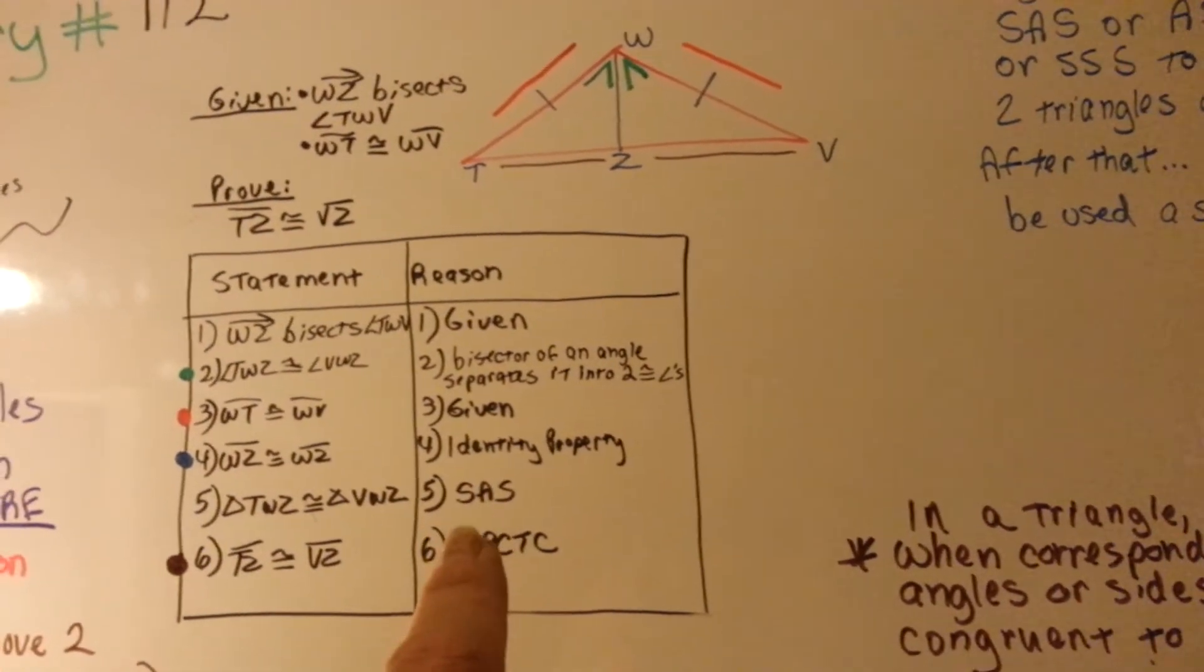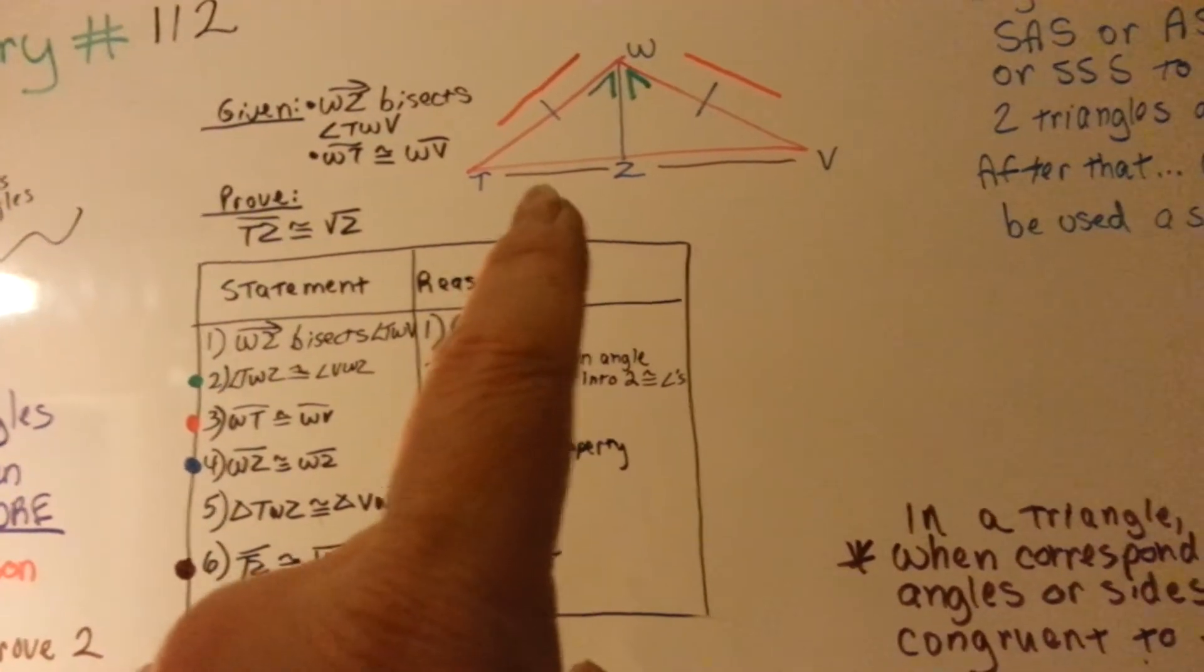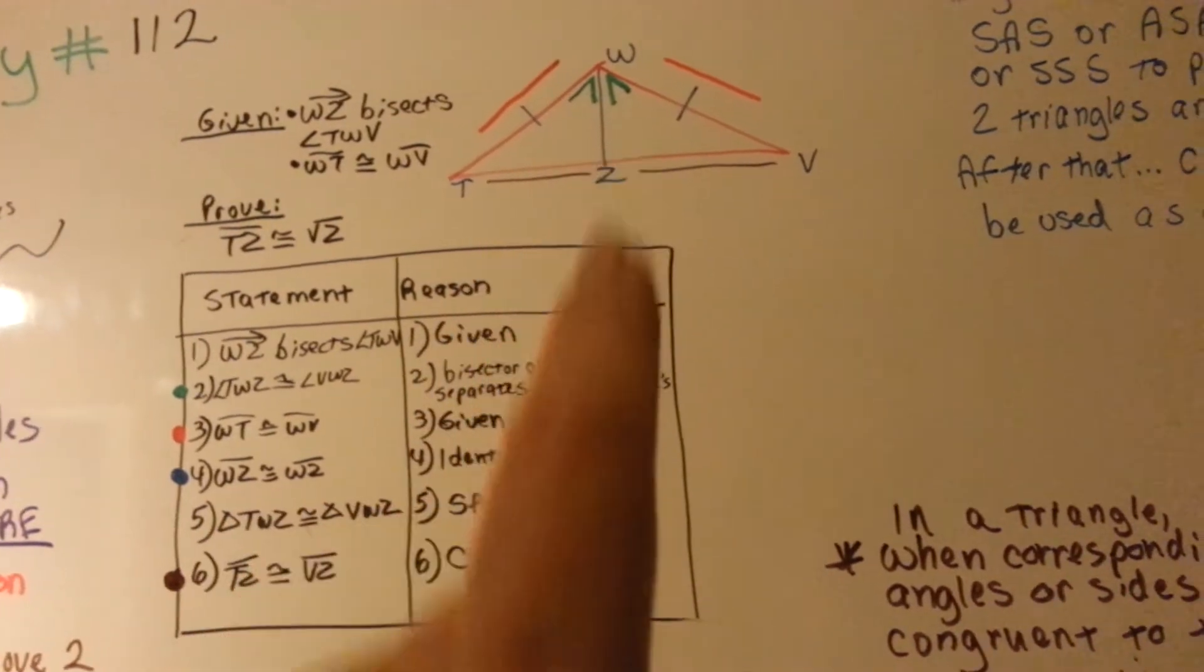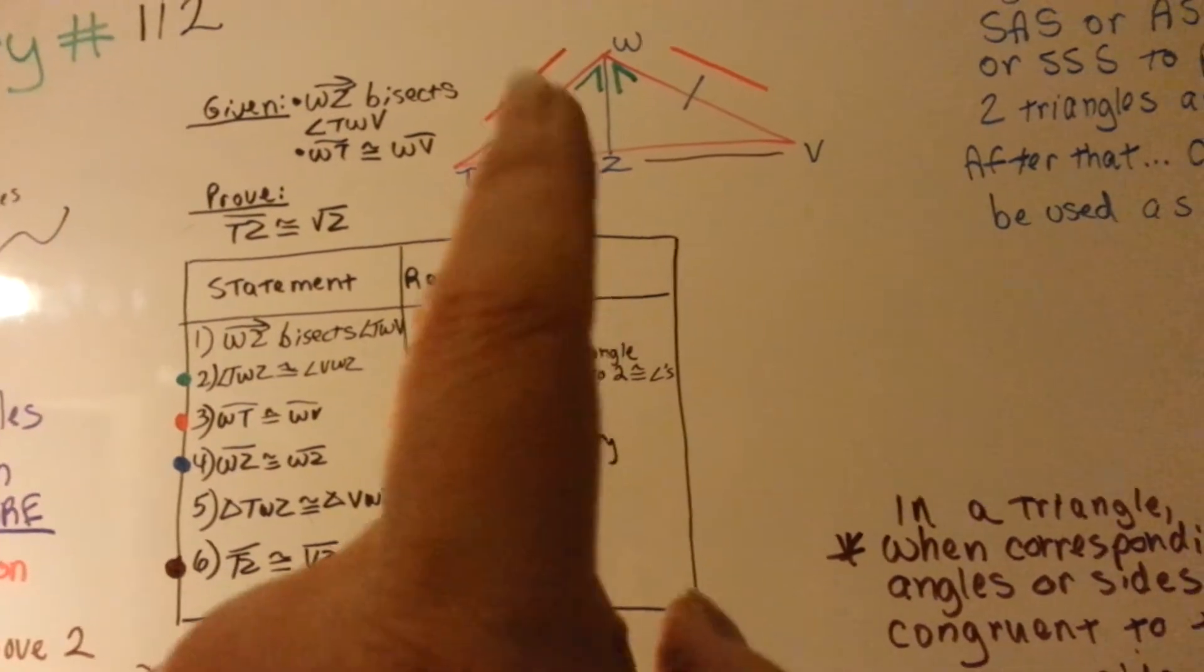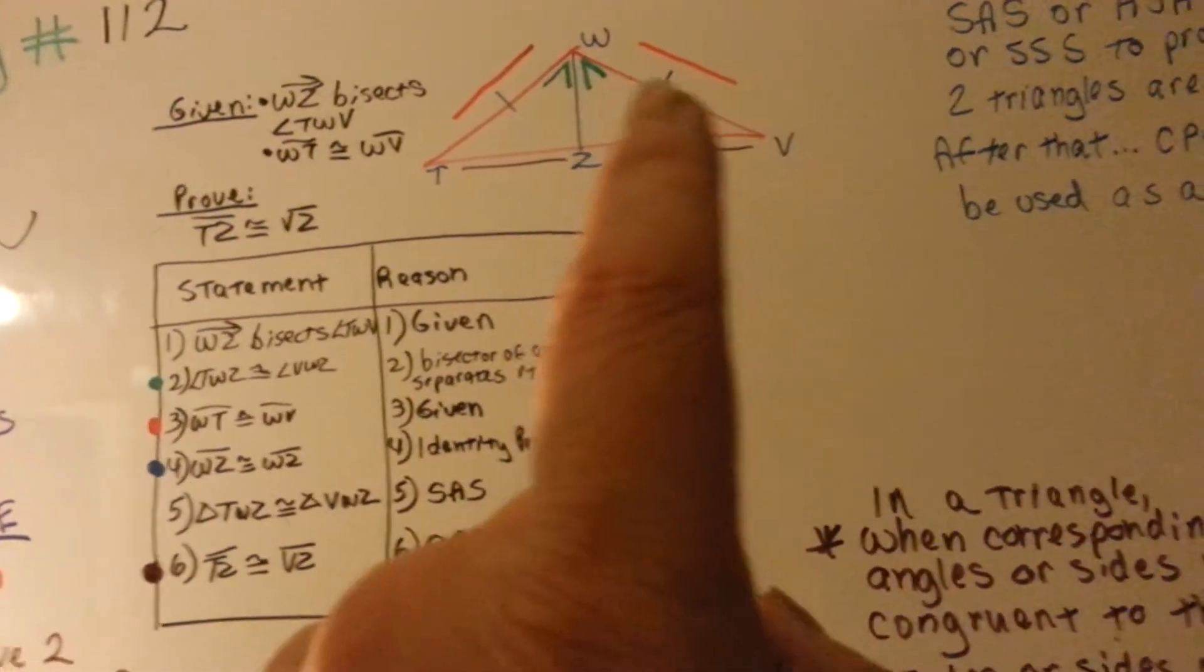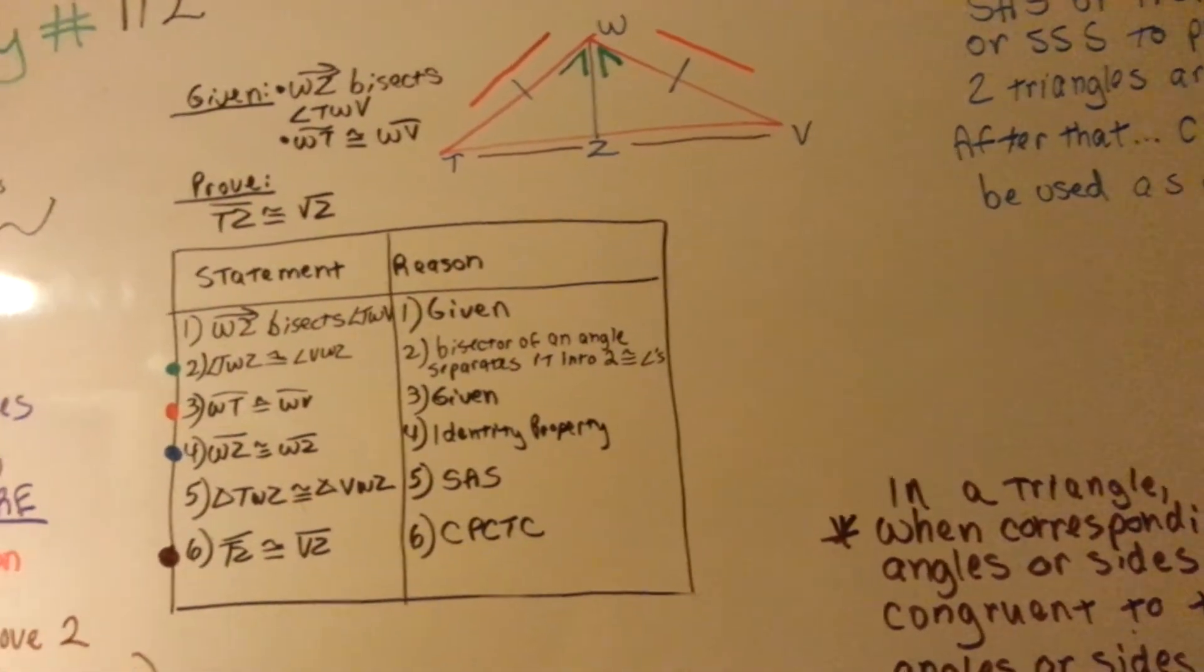Side, angle, side means there is a side, and an angle, and a side that are congruent to a side, an angle, and a side on each triangle. In fact, they're using this side, this angle, and this side.